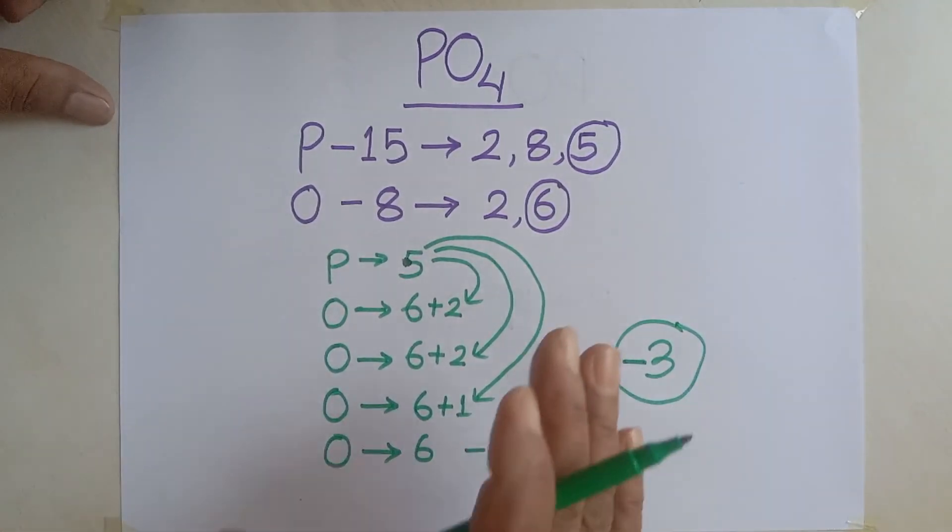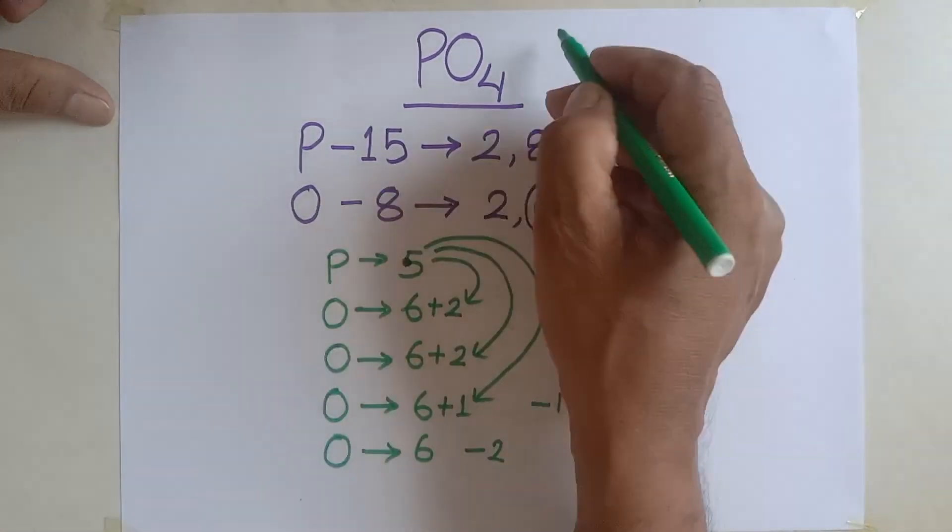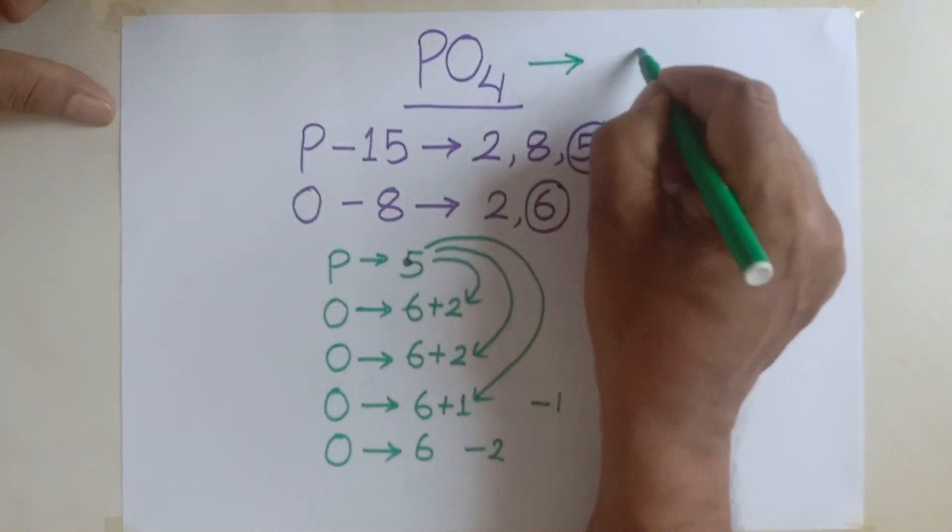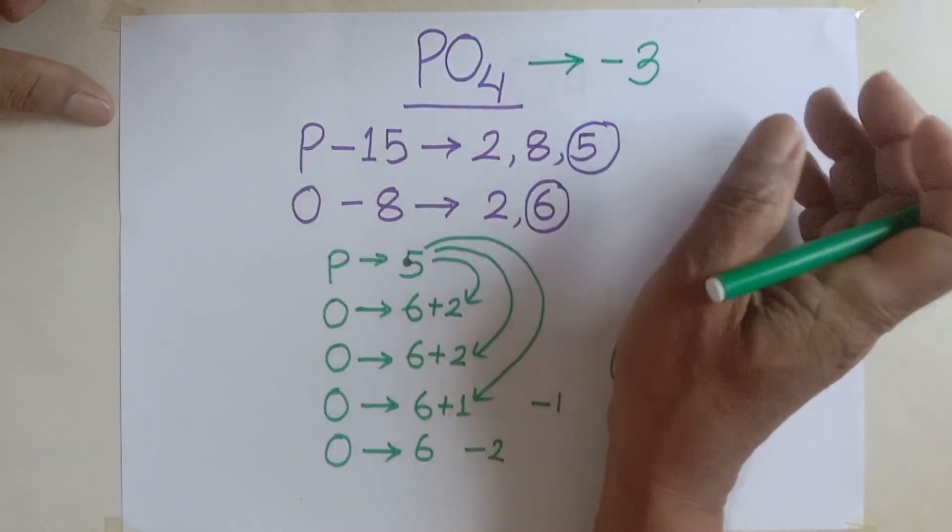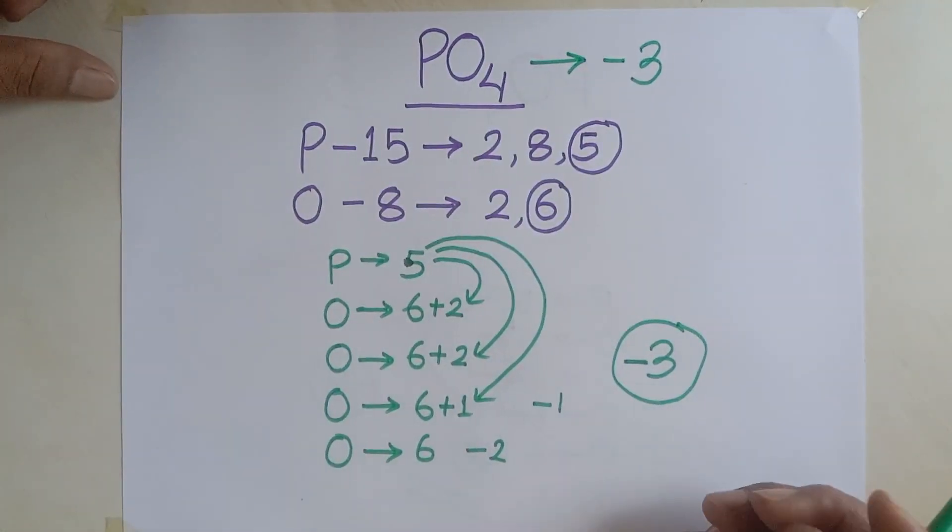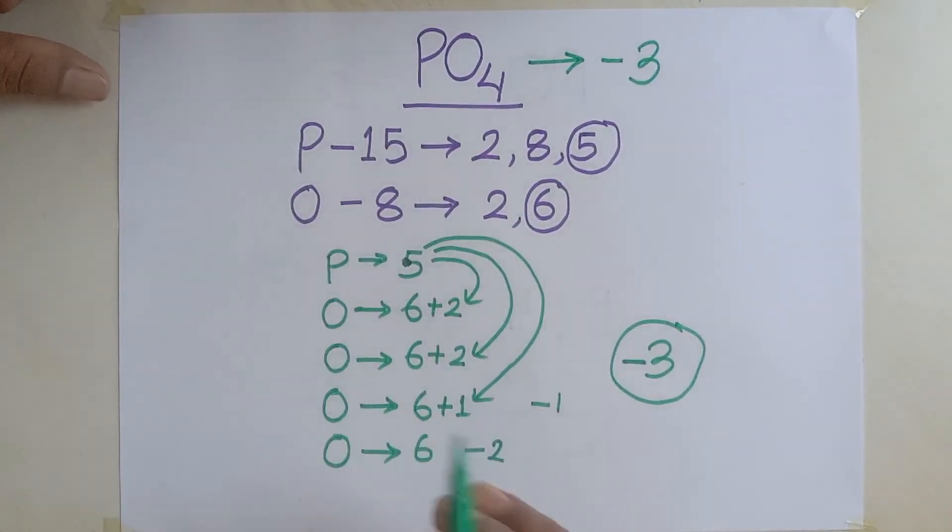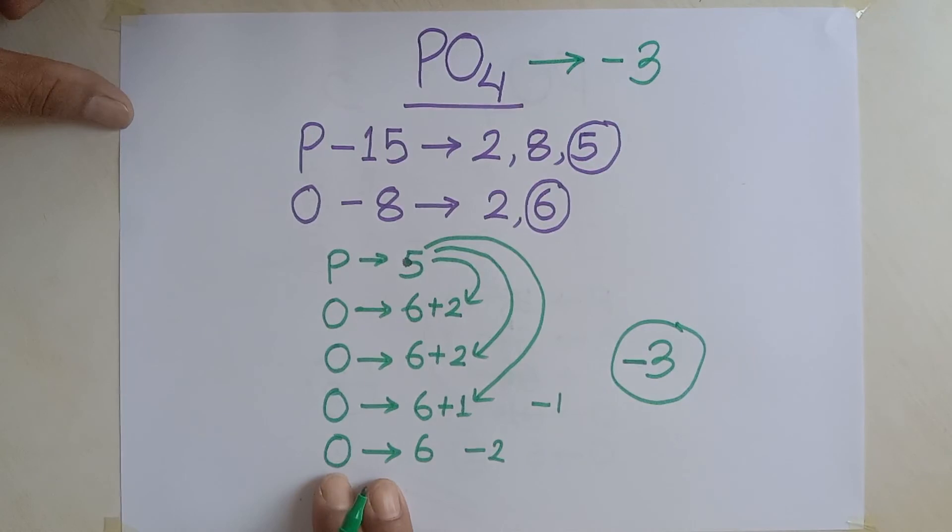This way, we can declare that valence of phosphate is three. And it is negative. It means, it requires electrons to fulfill the outermost shell of this oxygen and phosphorus. Okay? This much for today.